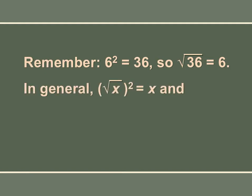They're the inverse operations of each other. In general, if you have the square root of x and you square it, you're just going to get what's inside of the radical. Since we have an x inside of the radical, our answer would just be x — because the square undid the radical. Here's another example: the square root of (x + 3) squared — since the plus 3 is still inside the radical — gives us just x + 3.